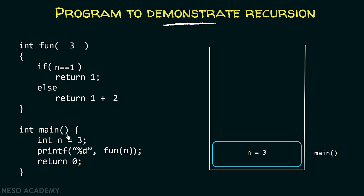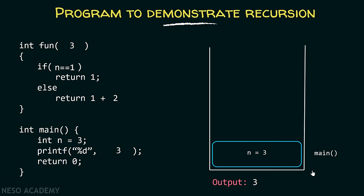Value 3 gets returned back to the main function at the place where we left off. This will get replaced by value 3, and we will simply print this value on the screen. Therefore, the output of this particular program is 3. Recursion is not rocket science — it is very simple to understand. How you are calling a function and where you will return back is what you need to understand, which can be simulated with the help of a stack.